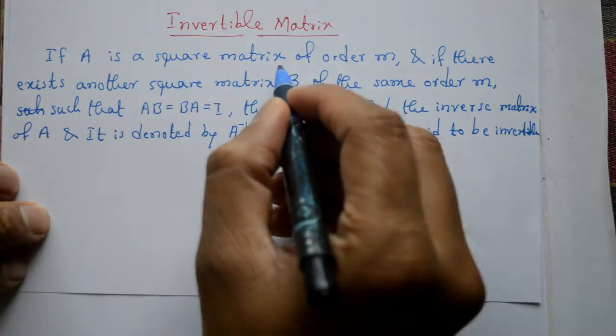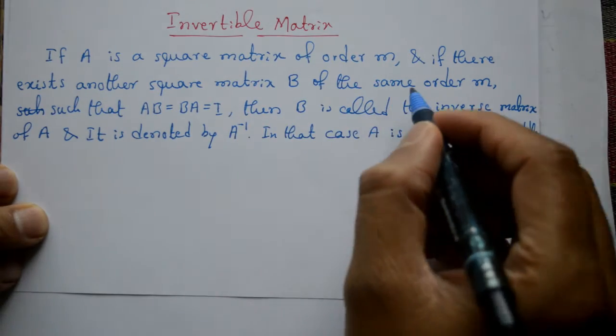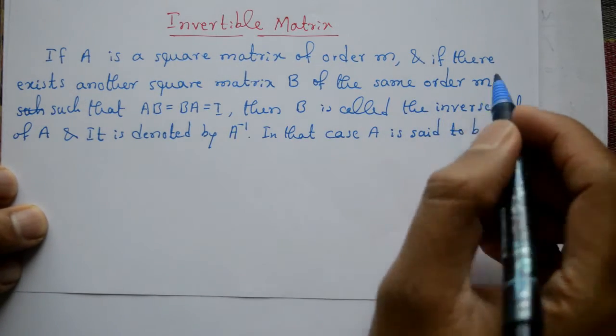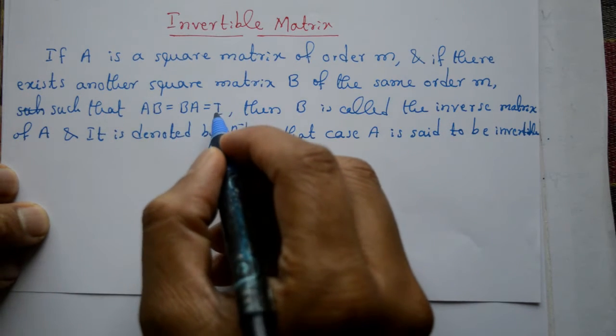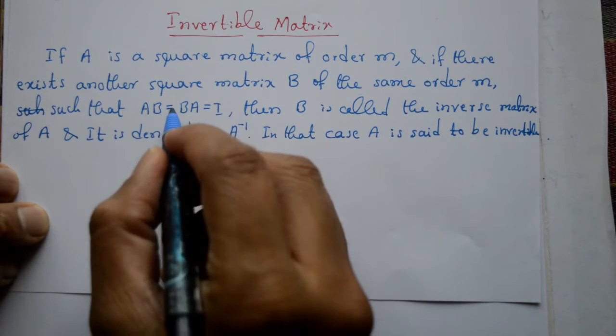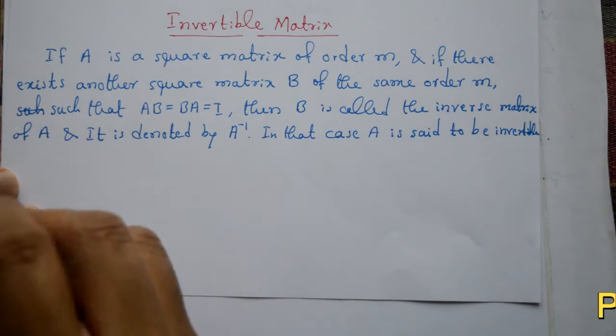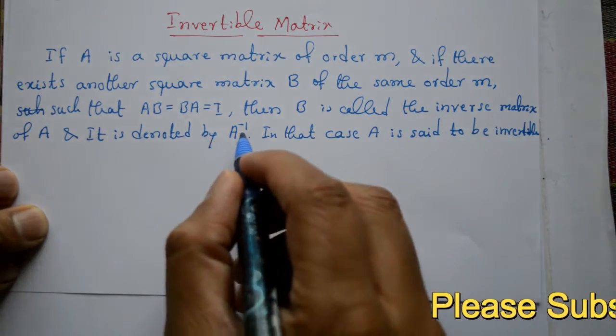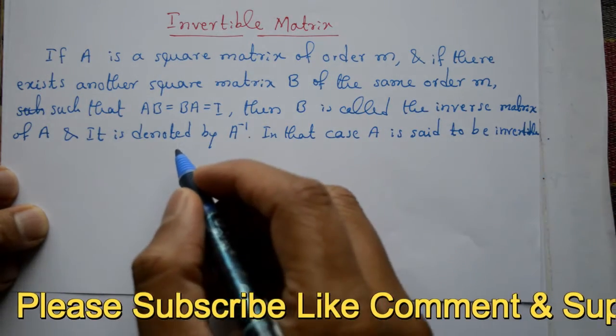Here invertible matrix hai. If A is a square matrix of order m, if there exists another square matrix B of same order m, such that A into B equal to B into A equal to I, then B is called inverse of A and it is denoted by inverse of A. In this case A is said to be invertible.